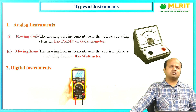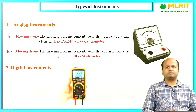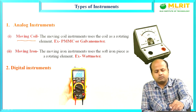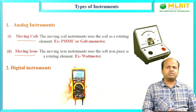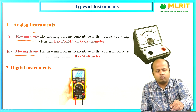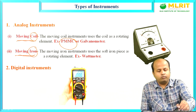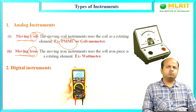Before discussing PMMC, I would like to have a discussion on types of instruments. We already know that there are analog instruments and digital instruments. In analog instruments, there are two types: moving coil and moving iron based. In moving coil, the coil will move; in moving iron, the iron will move. PMMC is a part of the moving coil instrument, which is a part of the analog instrument.